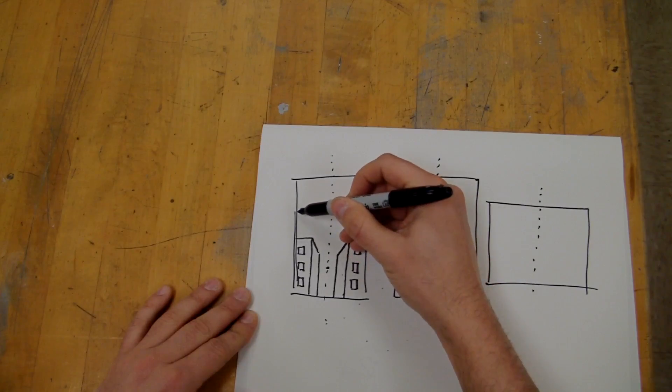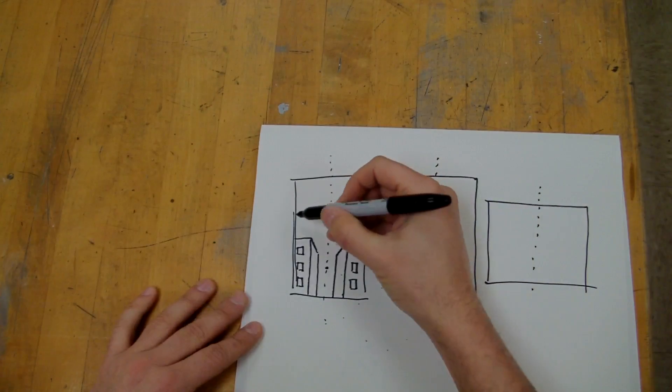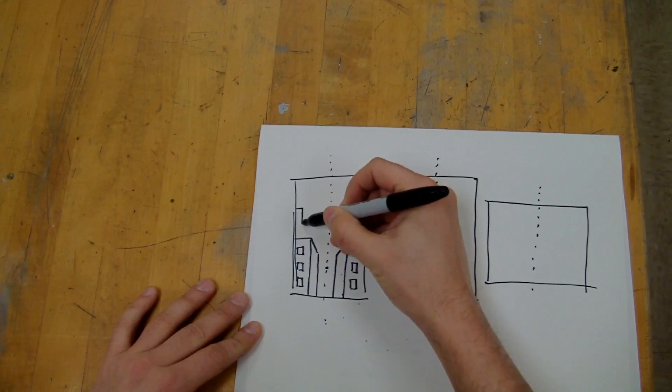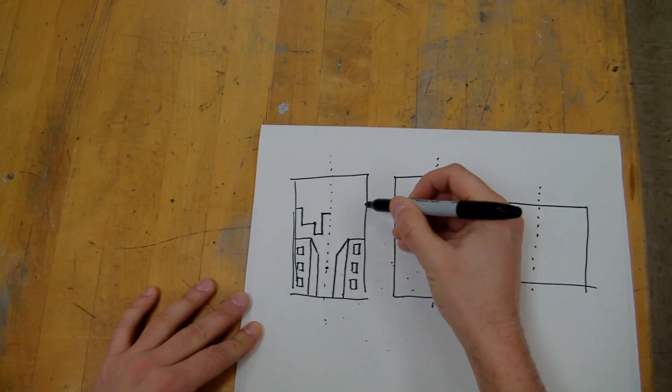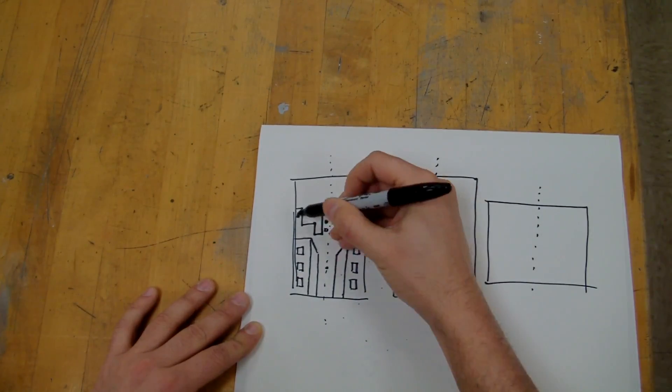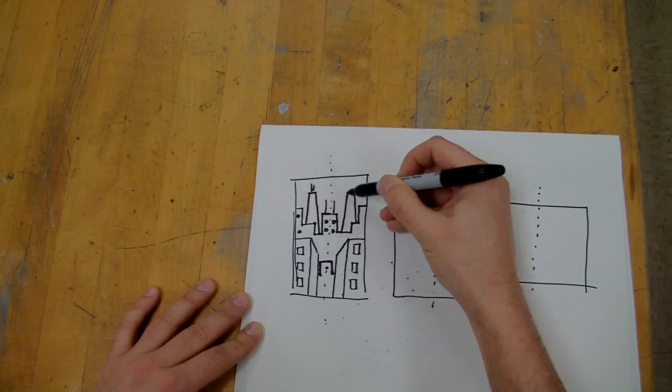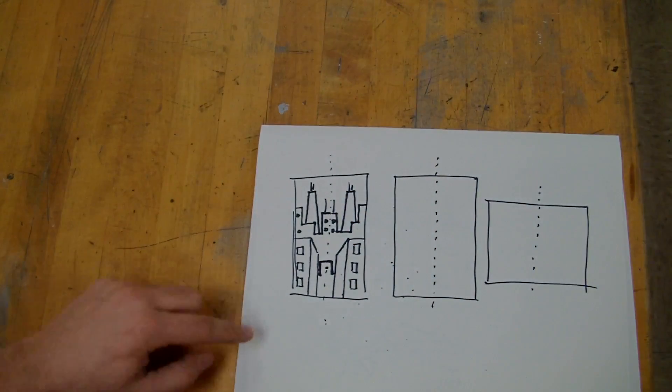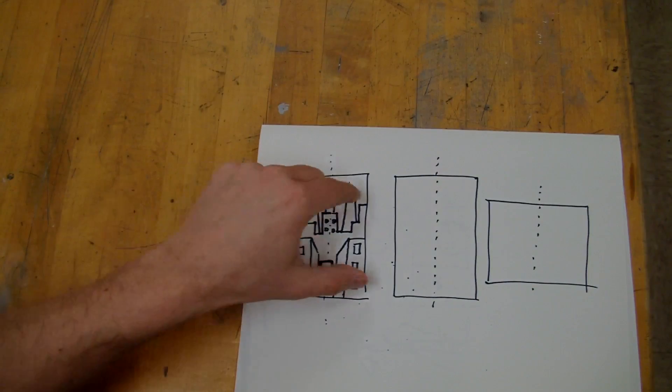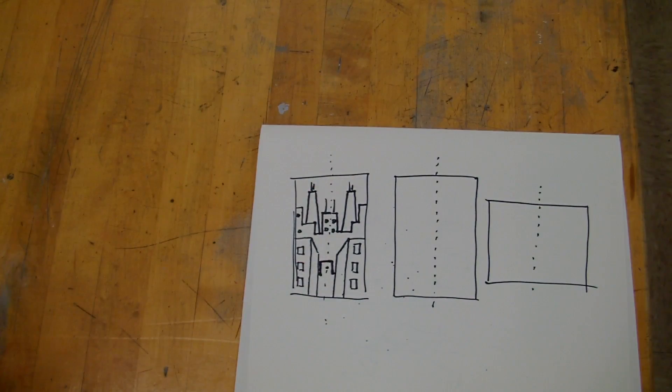Then maybe I'll put another one over here. So now I'm going to put another one back here. So now I've got my cityscape. Everything I did on the left side is the same as it is on the right side.